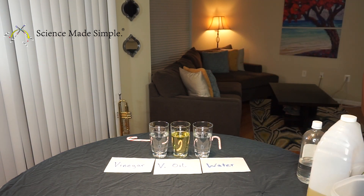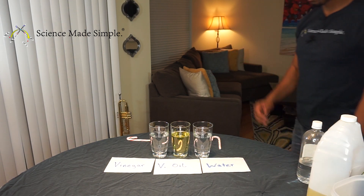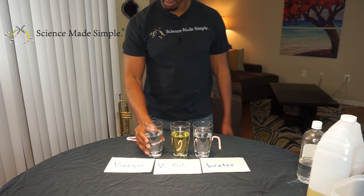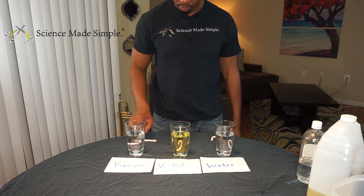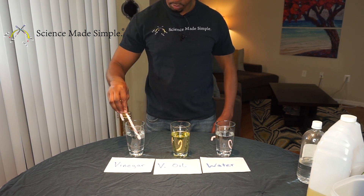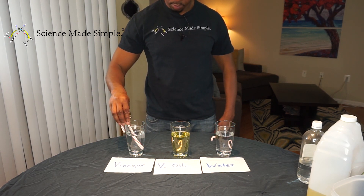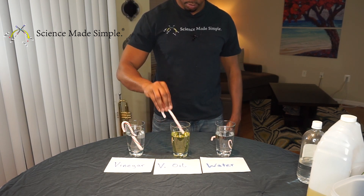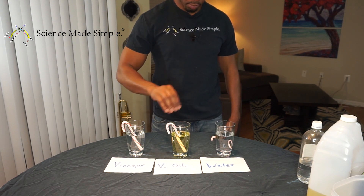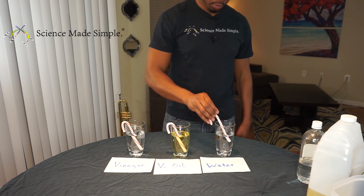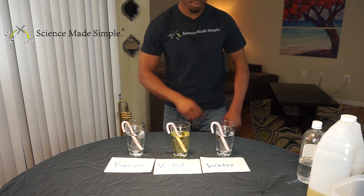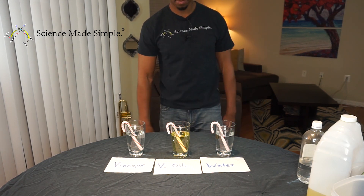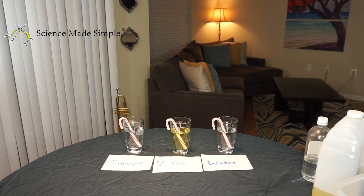The temperature of the liquids might affect the experiment, so let's make sure all the liquids are the same temperature. As I introduced the experiment, I said I was using room temperature liquids — meaning all the liquids have been sitting out in the same room, so their temperatures we can assume are roughly the same. Finally, we will place the peppermints in the various liquids for about the same amount of time.